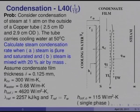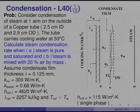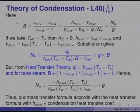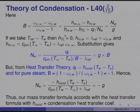We can obviously solve this problem from heat transfer theory, but we are going to treat this as a mass transfer problem. My first task is to show equivalence between the Reynolds flow model and the heat transfer theory of condensation. In our case, B equals (ω_V∞ − ω_Vw)/(ω_Vw − 1), which also equals (h_m∞ − h_mw − h_tl + q_l)/n_w, and that equals n_w/G.